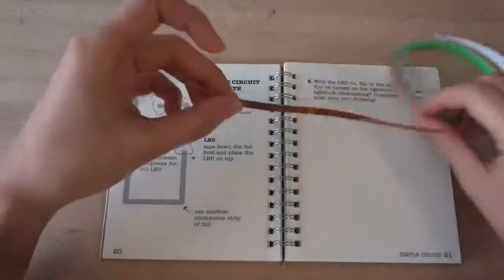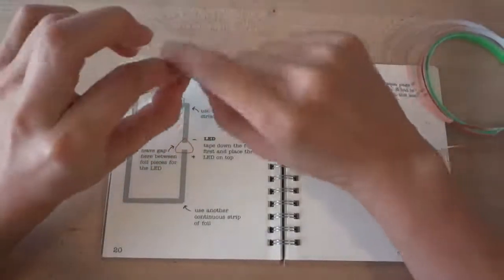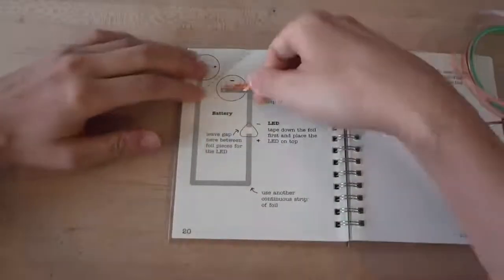First, stick conductive foil tape over the gray lines in the template. This will make the electrical connections in your circuit.